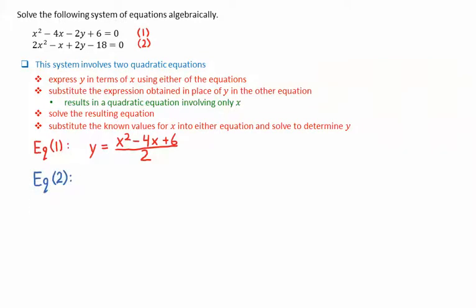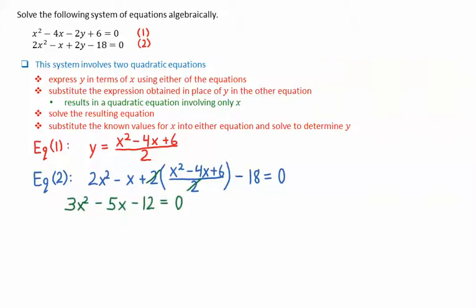Then looking at equation 2, I'll substitute this expression in place of y. Note here that the 2's cancel out. We can then combine like terms, giving us 3x squared minus 5x minus 12 equals 0.